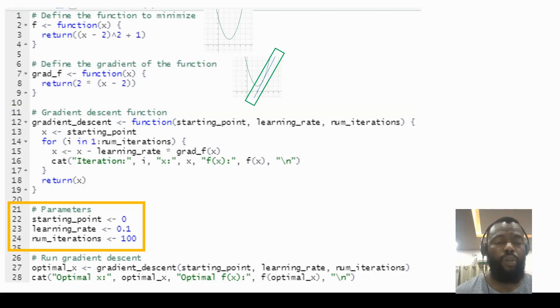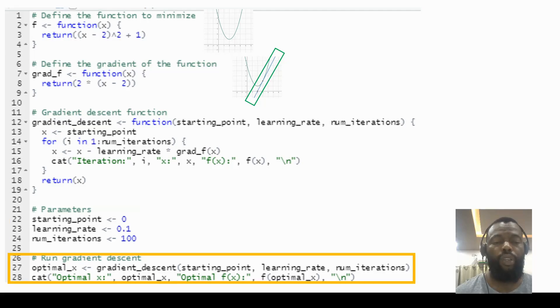Here we have all parameters. Starting point we choose as 0, can be a random number. Learning rate of 0.1 and number of iterations 100. So here we call the gradient descent function with these arguments: starting point, learning rate, and number of iterations, and we print the optimal values.